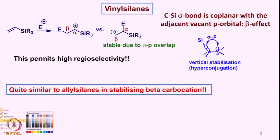Now we look at what is the vinylsilane based chemistry. Vinylsilane based chemistry is very similar in terms of the possibility of reacting with an electrophile, following the same principle we have been discussing. If we see this vinylsilane written like this, when an electrophile reacts, it could be expected to react at either end of the double bond.